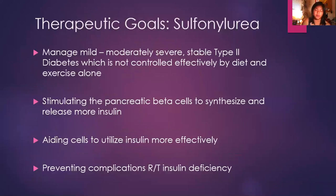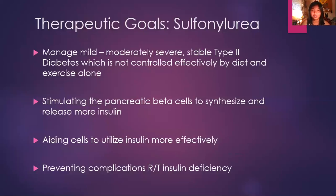For patients who need additional medication to control their blood glucose levels, here is my drug class again — sulfonylureas. It manages mild to moderate stable type 2 diabetes not controlled effectively by diet and exercise alone. It works by stimulating pancreatic beta cells to synthesize and release more insulin, aiding cells to utilize insulin more effectively, and preventing complications related to insulin deficiency, including all those complications listed in the earlier slides.